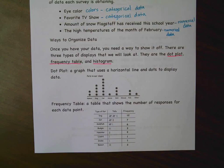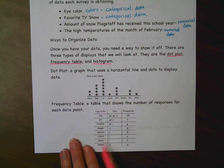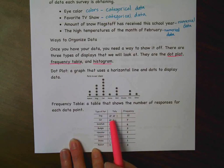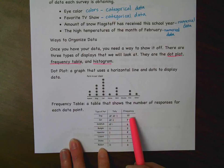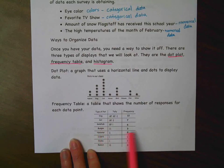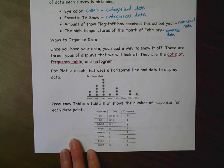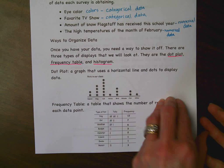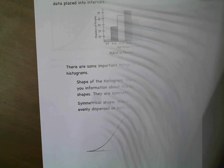A frequency table is a table that shows the number of responses for each data point. You're looking at type of pet: the tally tells you the count and the frequency is the actual numerical value. For example: dog has twelve, cat has seven, goldfish has six, budgie has three, hamster has two, lizard has one, snake has one, and rabbit has three. Frequency tables are very helpful tools for understanding data.